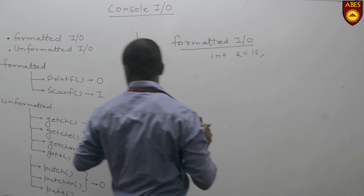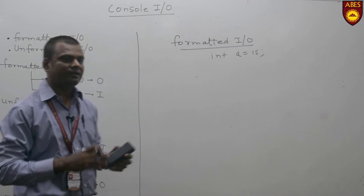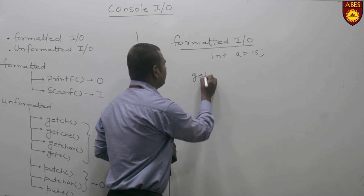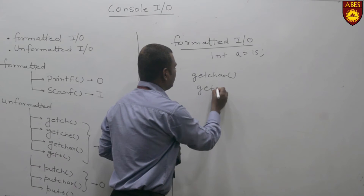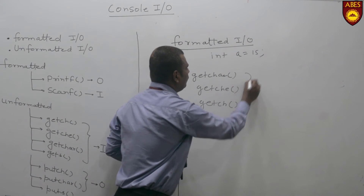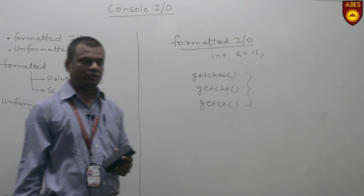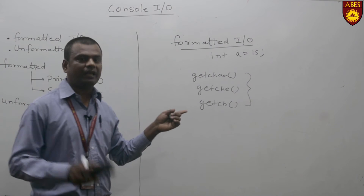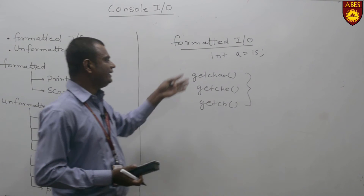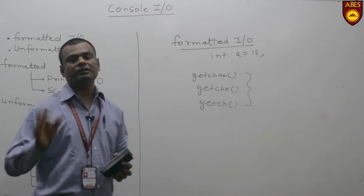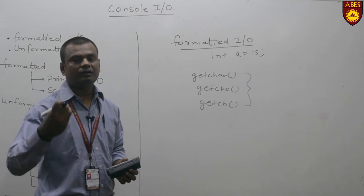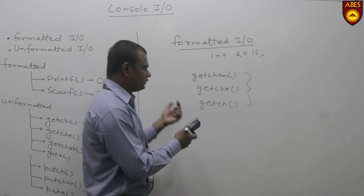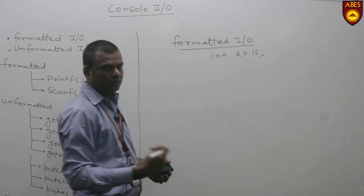Now, moving to Unformatted I/O — unformatted IO has those functions in which there is no internal formatting; it works directly on the variable. The first functions are getch, getche, and getchar. All three are used to read a character from the console. The basic difference is that getch simply reads the character without giving any echo. Getche reads the character and gives the echo on the console. While getchar reads the character only after the carriage return — meaning it will process when the enter key is pressed.